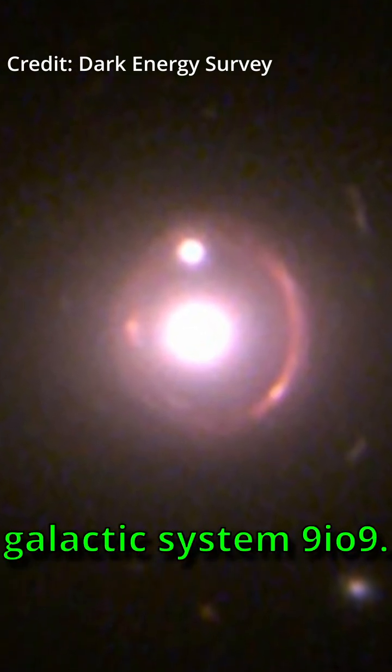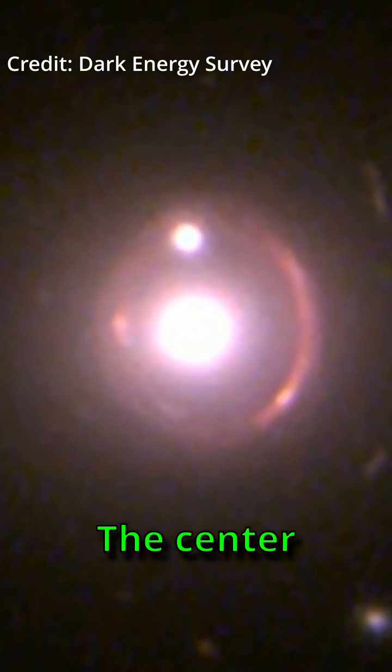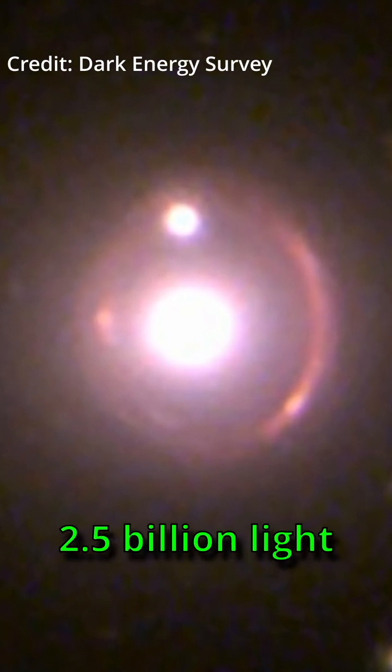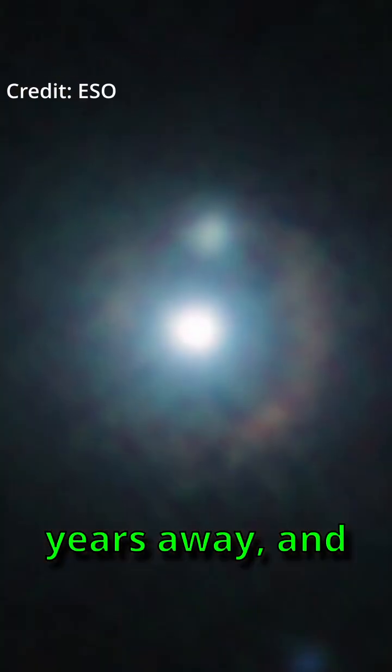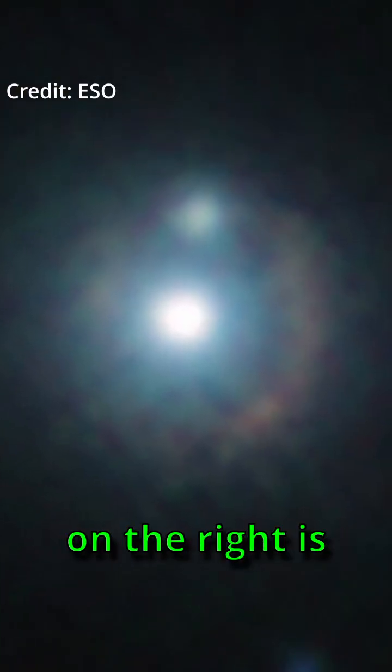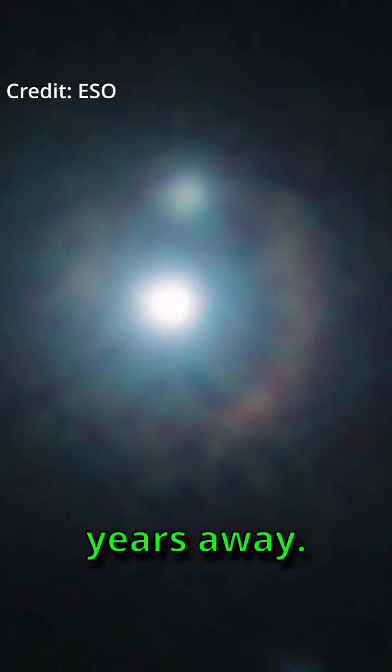This image is the Galactic System 9I09. The center galaxy is about 2.5 billion light-years away, and the lensed galaxy on the right is more than 11 billion light-years away.